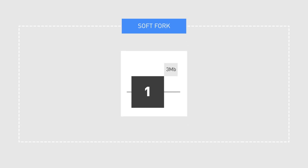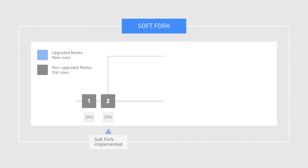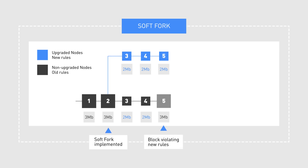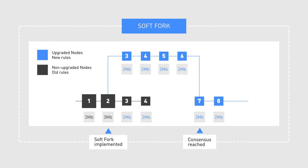Imagine a soft fork which makes a new rule lowering the block size from 3 megabytes to 2 megabytes. Older nodes will still be able to process transactions and push new blocks that are 2 megabytes or less. But if an older node tries to push a block greater than 2 megabytes to the network, newer nodes will reject that block because it violates the new rules. That encourages older nodes to update to the new protocol, since they aren't as efficient as the updated ones.